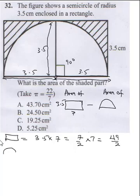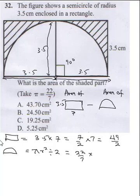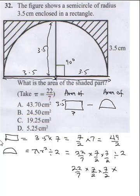For the semicircle, the formula is pi r squared divided by 2. That is 22 over 7 times (7 over 2) squared divided by 2, which equals 22 over 7 times 7 over 2 times 7 over 2 times 1 over 2. The 7s cancel and 2 into 22 is 11, giving us 77 over 4.